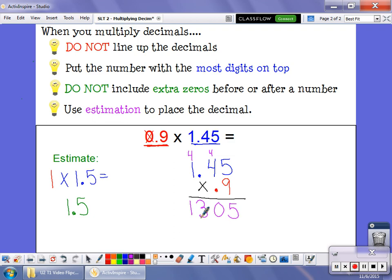So my answer has to be close to 1 and a half. If I want to put my decimal point, it's going to go right here. Because this is 1.305, which is close to 1 and a half. Closer than if I had put my decimal point here, which would give me 13. And closer than if I put it here, which doesn't even have a whole number. So again, that estimate really helps you figure out where your decimal point should go.